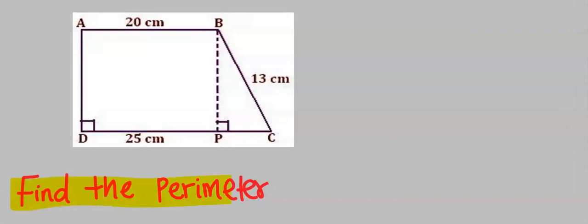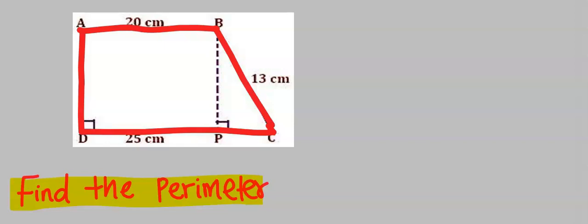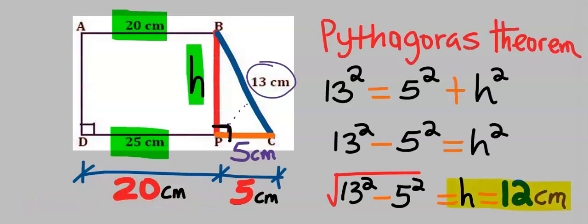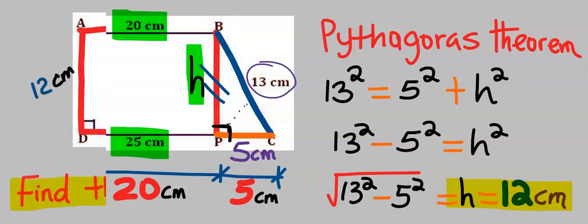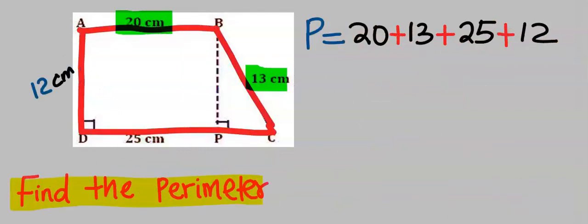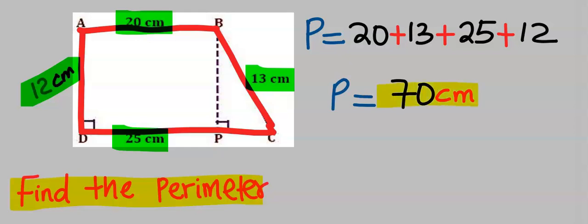Let's find the perimeter of this trapezium by summing all four sides. Using Pythagoras theorem, the height is 12 cm, and this side is also 12 cm because the two sides are equal. We add 20, 13, 25, and 12. The perimeter is 70 cm.